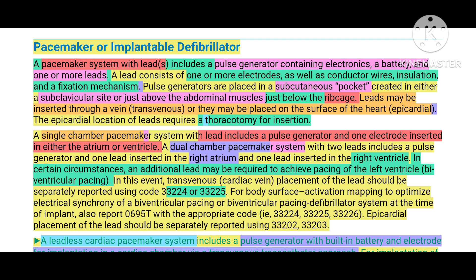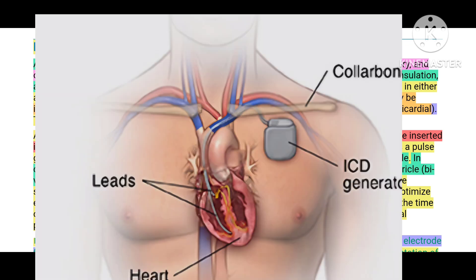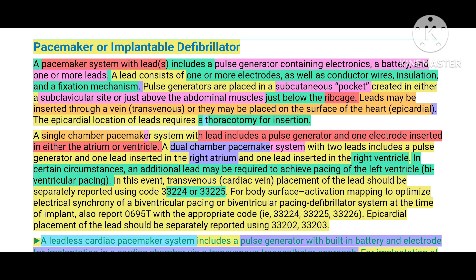A pacemaker system with lead or leads includes a pulse generator containing electronics, a battery, and one or more leads. A lead consists of one or more electrodes, conductor wires, insulation, and a fixation mechanism. The pulse generator is a battery placed below the skin within a subcutaneous pocket, created either at a subclavicular site or just above the abdominal muscles below the ribcage — usually below the collarbone or just below the ribcage in the abdominal muscle region.